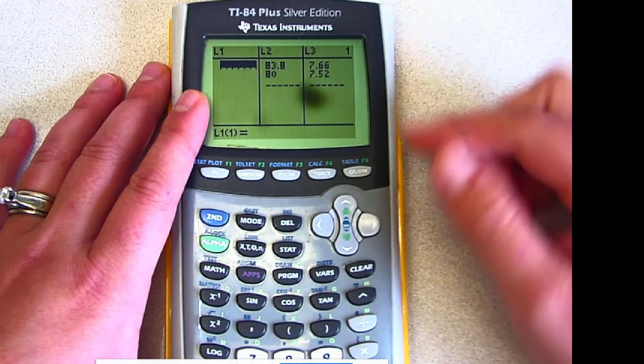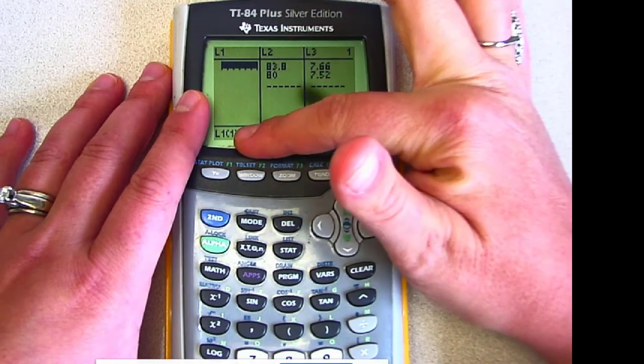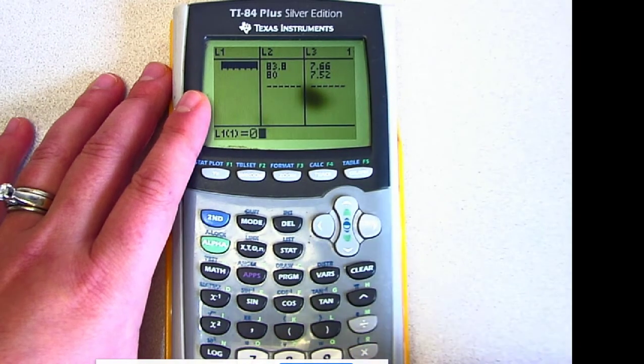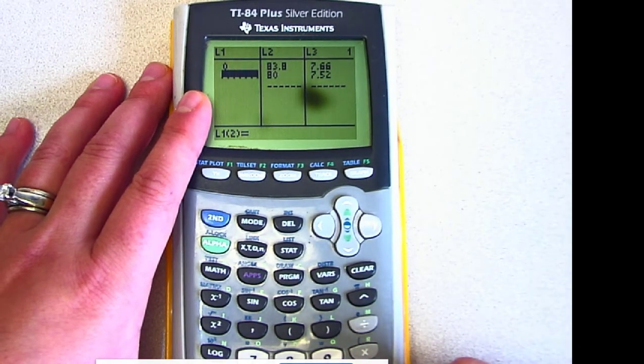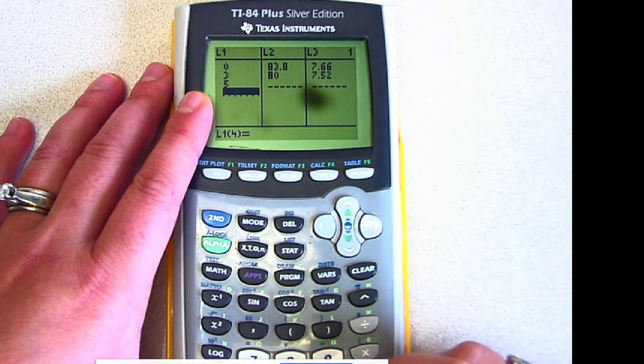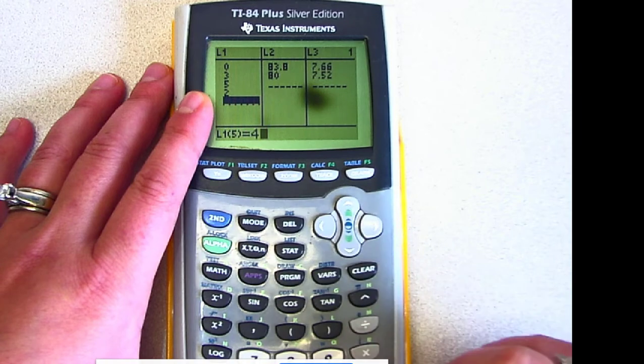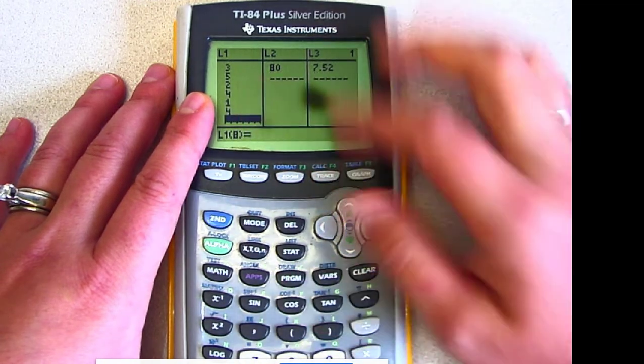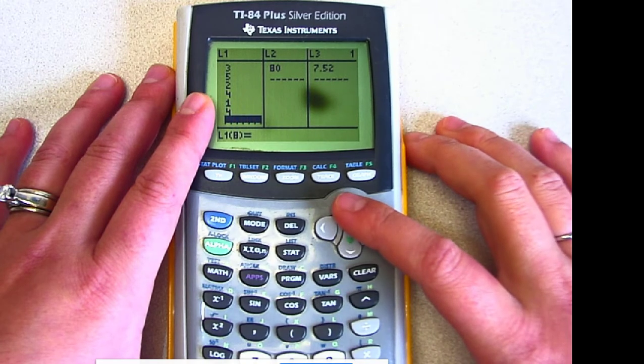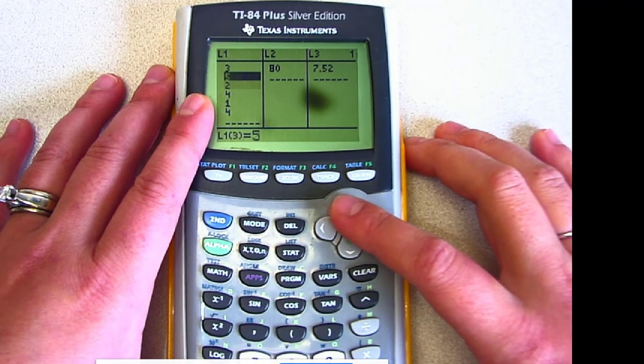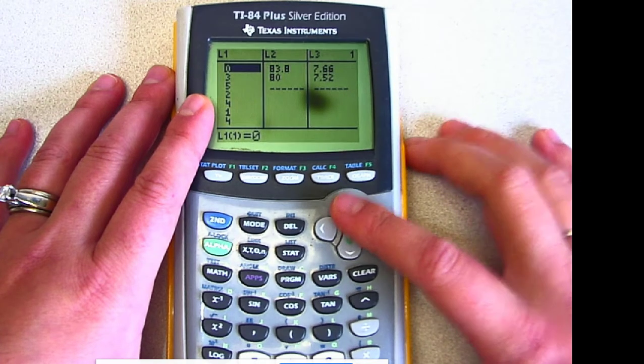I'm going to enter the data from the notes: 0, Enter, 3, Enter, 5, Enter, 2, Enter, 4, Enter, 1, Enter, and then 4. It's wise to get into the habit of checking your data entry, so I'm just going to scroll back up slowly and make sure I have everything entered correctly.